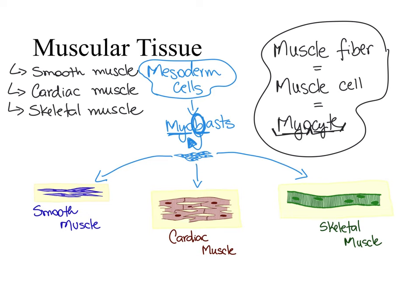Where do we find smooth muscle? We find it in the wall of blood vessels, the esophagus, the stomach, and the intestines — basically in the wall of hollow organs. Can you voluntarily contract your stomach or decrease the diameter of your blood vessels? No, you cannot. That tells you that smooth muscle is under involuntary control. We cannot consciously control smooth muscle — it is automatically controlled by our nervous system, meaning smooth muscle is under autonomic control.